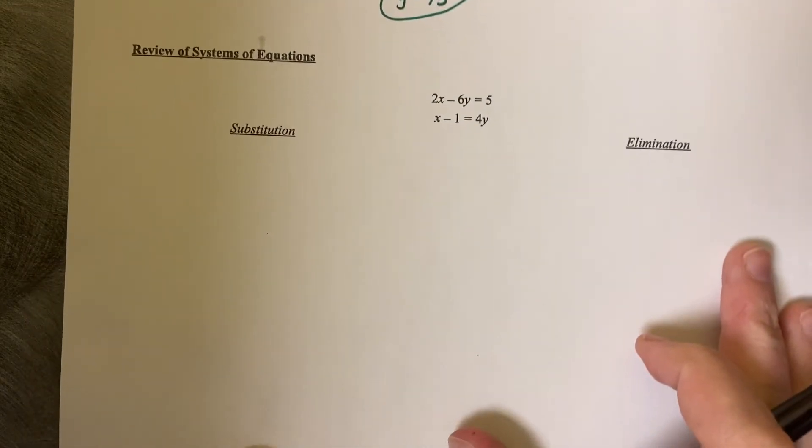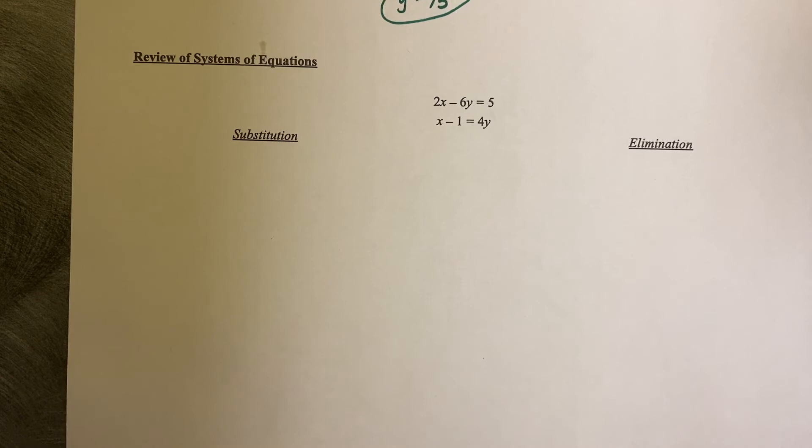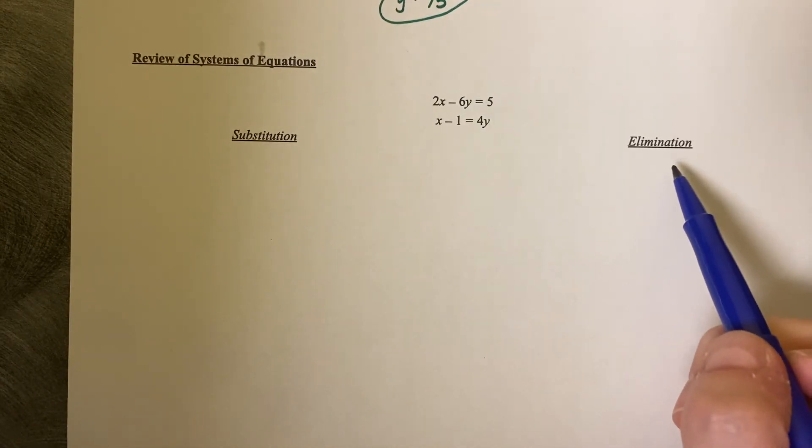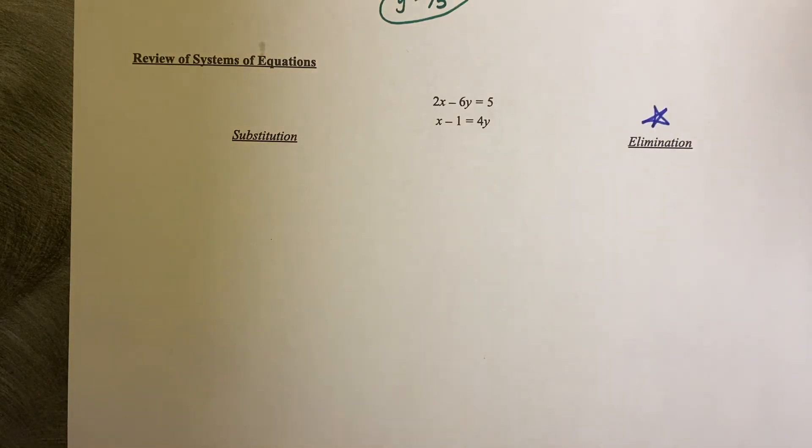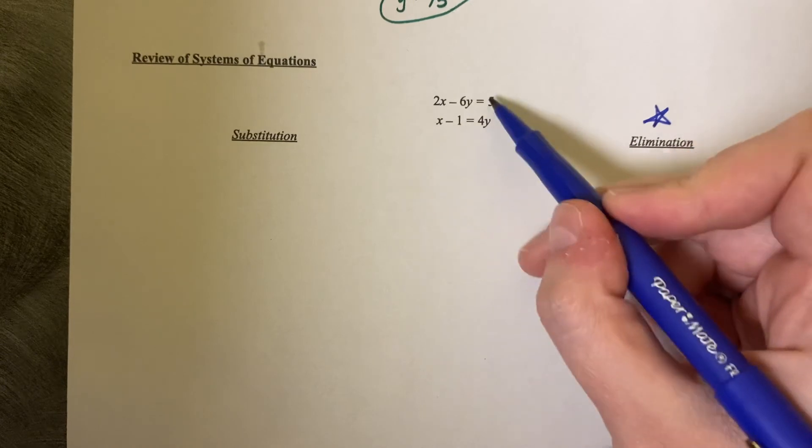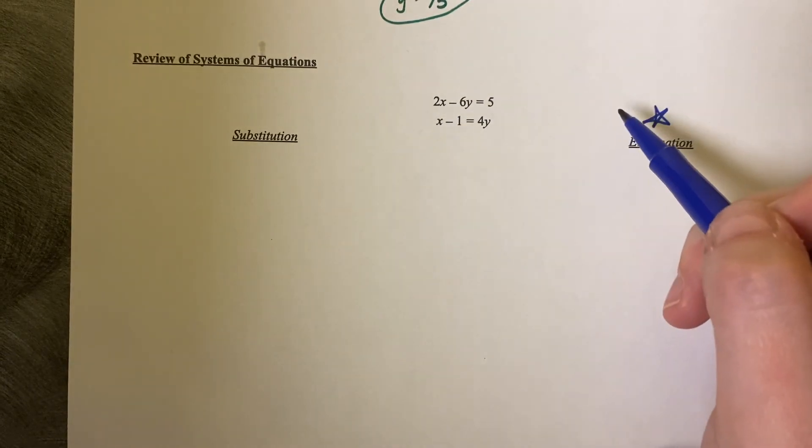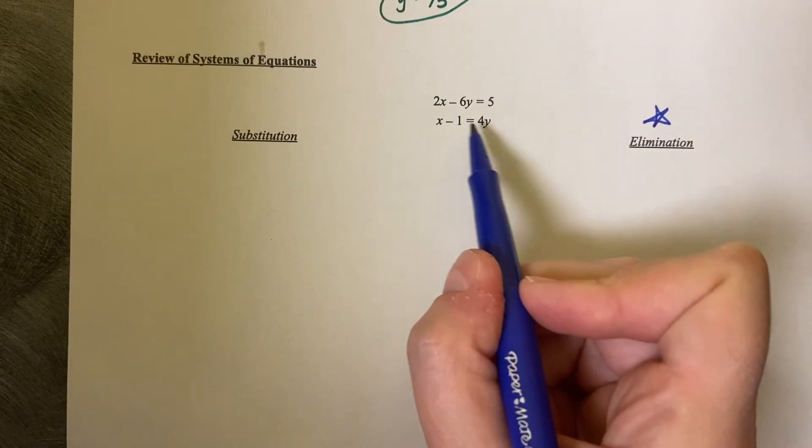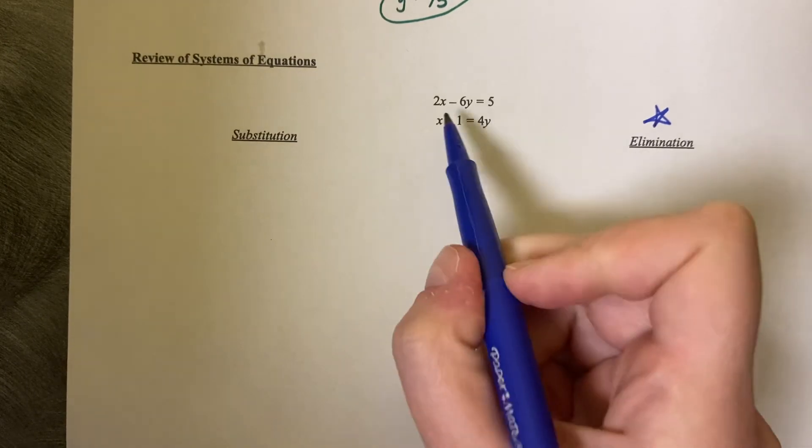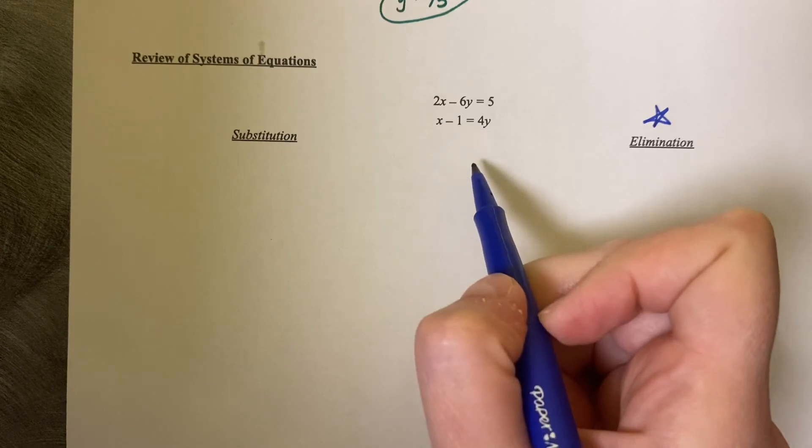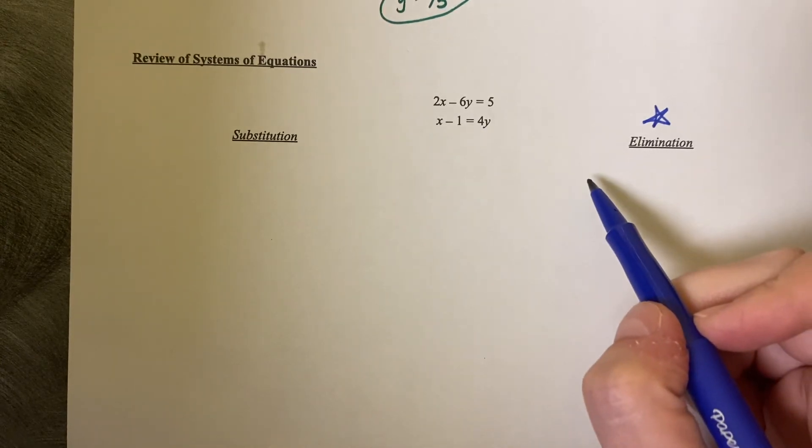All right, let's do a small review of systems of equations. There's two different options when you're solving a system using substitution or elimination. I would say that most of the time you're going to lean towards elimination. This equation right here is not set up for elimination right now because the X and the Y are not on the same side of the second equation. They are on the same side as the first but not on the second. So let's do elimination first.